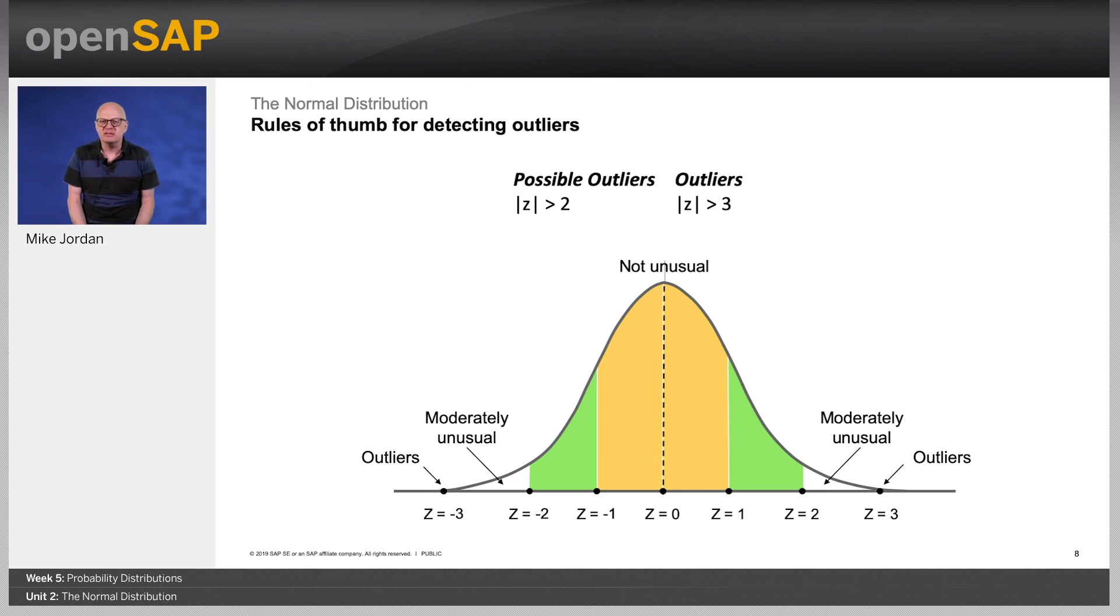In a previous lesson, you were introduced to box plots. In contrast to z-scores, the values of the quartiles used to calculate the intervals for a box plot are not affected by the presence of outliers.